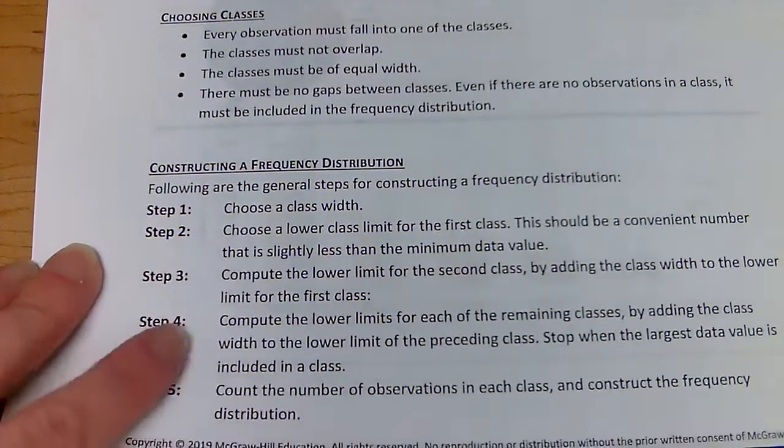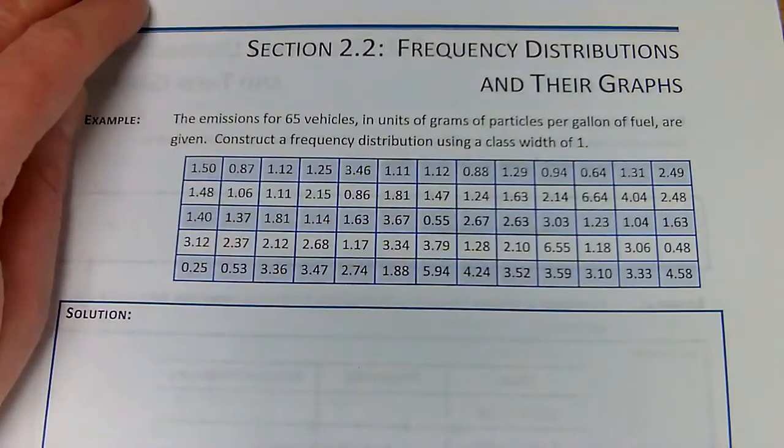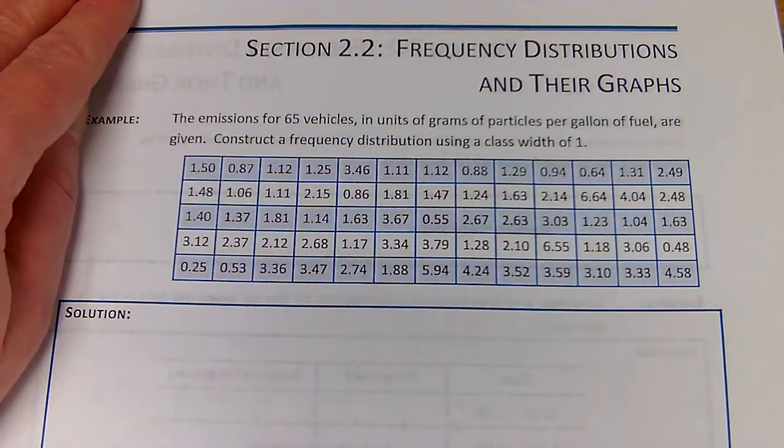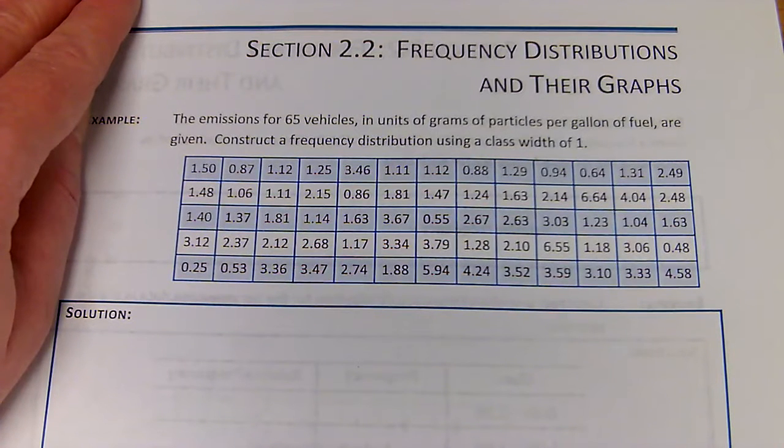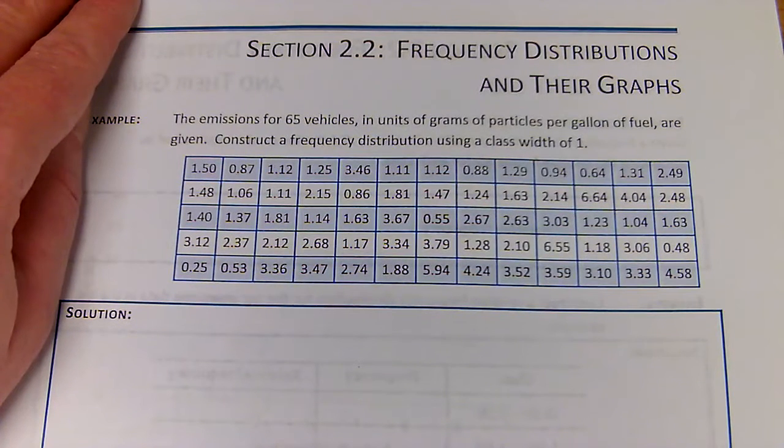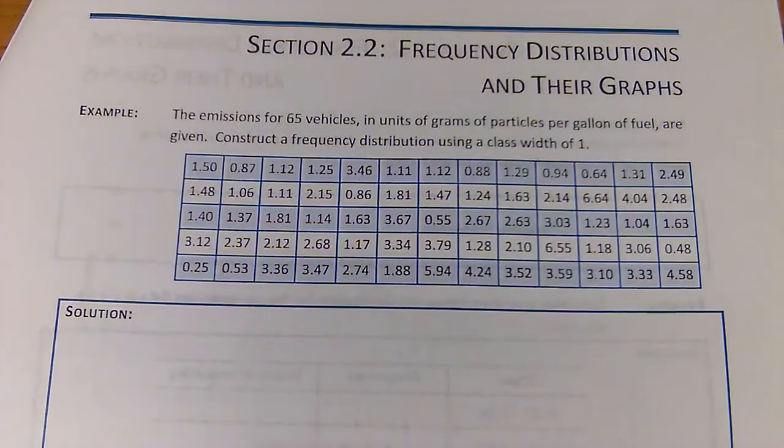We keep repeating that, then we can count the number of observations in each class to make our frequency distribution. So let's take this data: the emissions for 65 vehicles in units of grams of particles per gallon of fuel are given, and we're going to construct a frequency distribution using a class width of one.